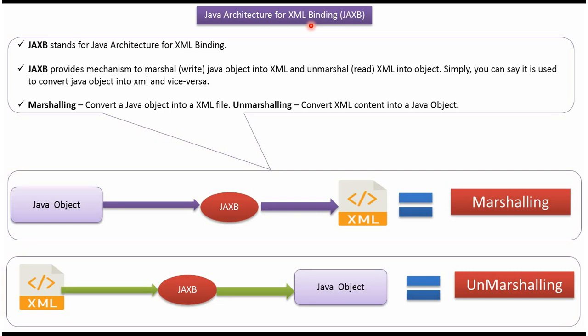In this video tutorial I will explain JAXP. JAXP stands for Java Architecture for XML Binding. Using JAXP, we can convert a Java object into an XML file, and this is called marshalling. And using JAXP, we can convert XML content into a Java object, which is called unmarshalling.